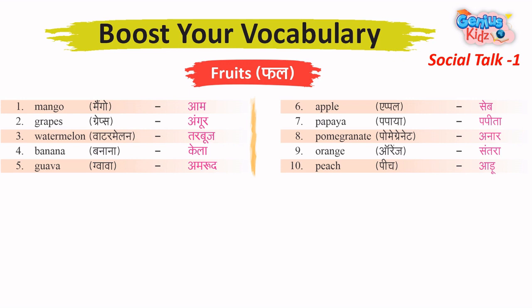5. Guava – Amrood. 6. Apple. 7. Papaya – Papita. 8. Pomegranate – Anaar. 9. Orange – Santara. 10. Peach – Aadu.